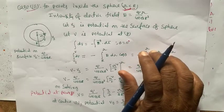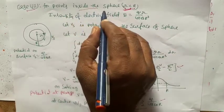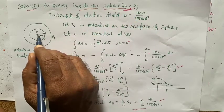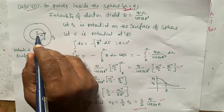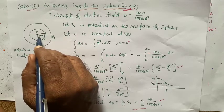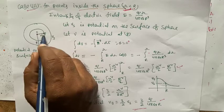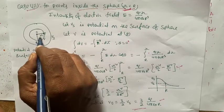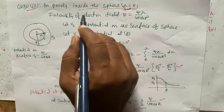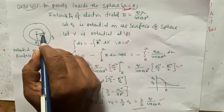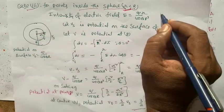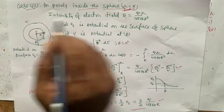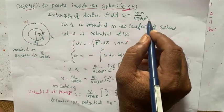Case 3: For a point inside the sphere, small r is less than capital R. The reference point P is at distance small r from the center O, where small r is less than capital R. Imagine a sphere of radius small r inside. The intensity of electric field at point P is E equals Q times r divided by 4 pi epsilon R cubed.